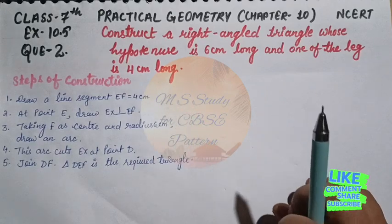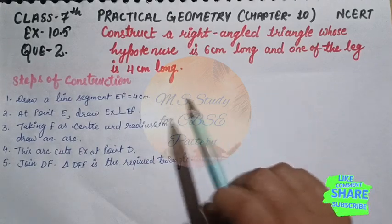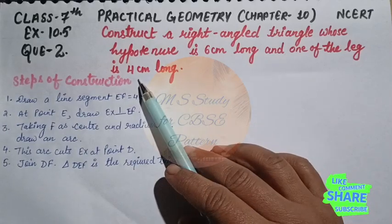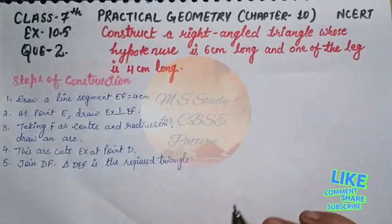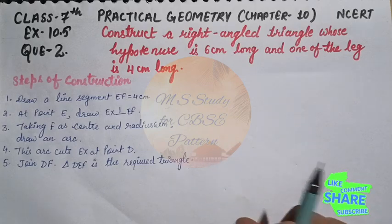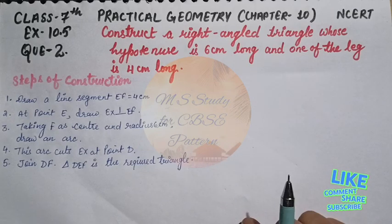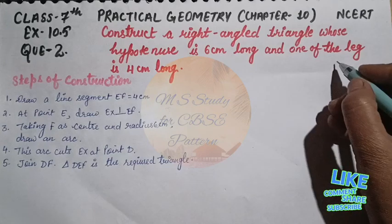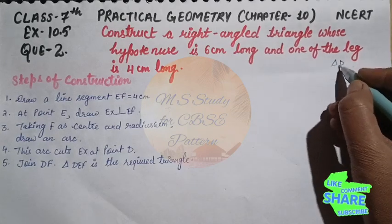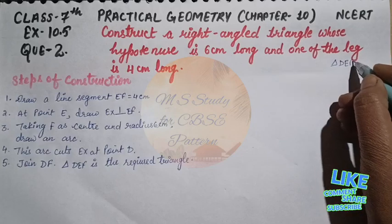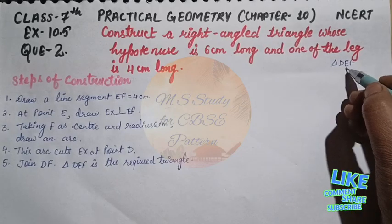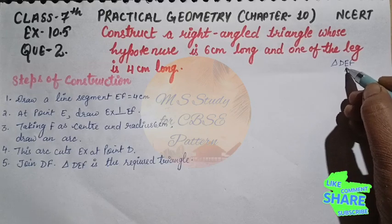Here you have hypotenuse length and one side length for a right-angled triangle. Because you have not been given a triangle name, we will call it triangle DEF, and point E will be the right angle.